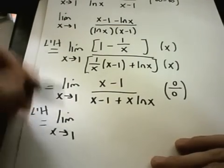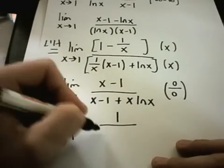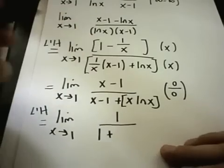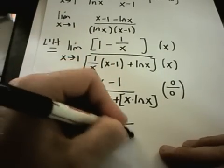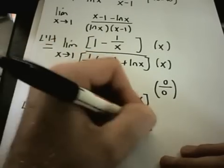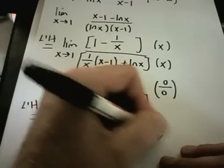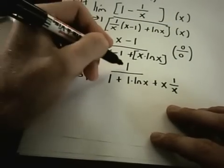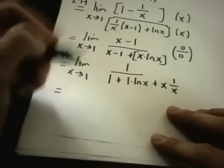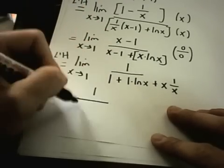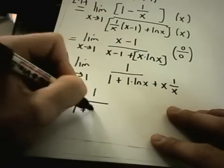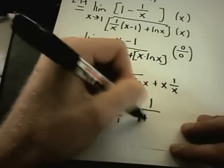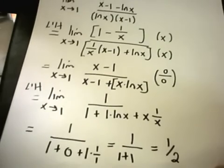Taking the limit as x approaches 1: the derivative of the top is just 1. On the bottom, I use the product rule on x times ln of x: derivative of x is 1 times ln of x, plus x times the derivative of ln of x which is 1 over x. Simplifying, there's a 1 on top, so we won't get 0 over 0. On the bottom: 1 plus ln of 1 is 0, then 1 times 1 over 1 equals 1. So I get 1 over 1 plus 1, which is one half.